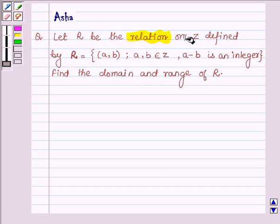Let R be the relation on Z defined by R = {(a,b) : a, b ∈ Z, a-b is an integer}. Find the domain and range of R.